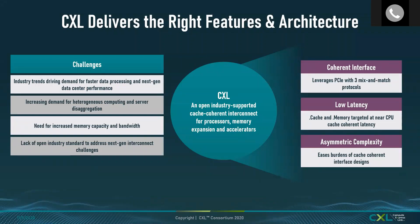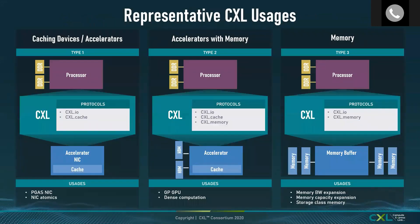The .cache and .mem protocols are designed for low latency — cache-coherent levels of latency. Asymmetric complexity is another key feature of CXL 1.1, where the burden is placed on the root complex, allowing endpoints to migrate from generation to generation and even across different CPU vendors, enabling design reuse.